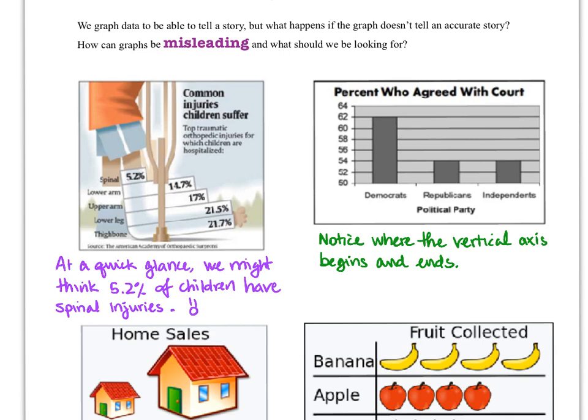In terms of the one on the right, percent who agreed with the court, notice that the difference between 62 and 54 looks tremendous. And we know that that is only the difference of 8%. So if this had been shown with a scale from 0 to 100, it would look very similar, not much of a difference at all. But here, it's super exaggerated. So we need to pay attention to where the vertical axis begins and ends and see if the differences are being exaggerated by the person who drew the graph. And maybe they have an agenda in trying to get us to believe one way or another.